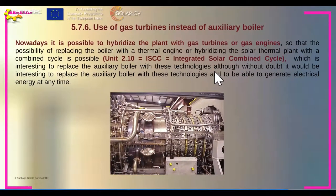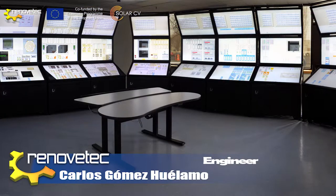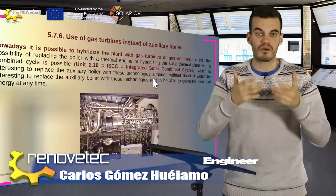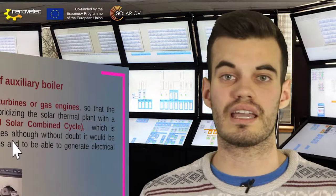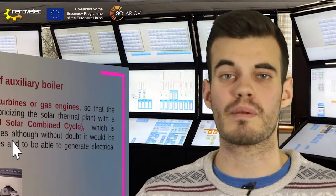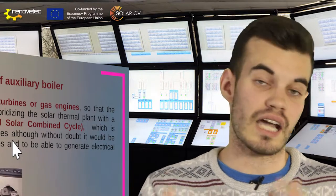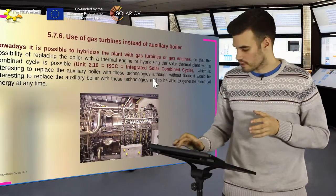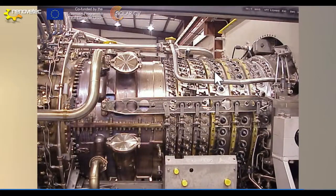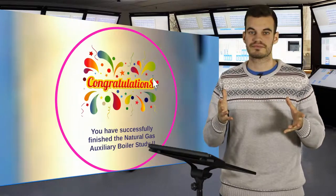To finish this element, we must understand that nowadays some companies are researching the possibility of incorporating a gas turbine instead of an auxiliary boiler in the PTCSP plant hybrid design — considering a thermal engine and creating an ISCC, that is, an Integrated Solar Combined Cycle. Here you can see an example of this gas turbine. So finally, you have successfully finished this element.